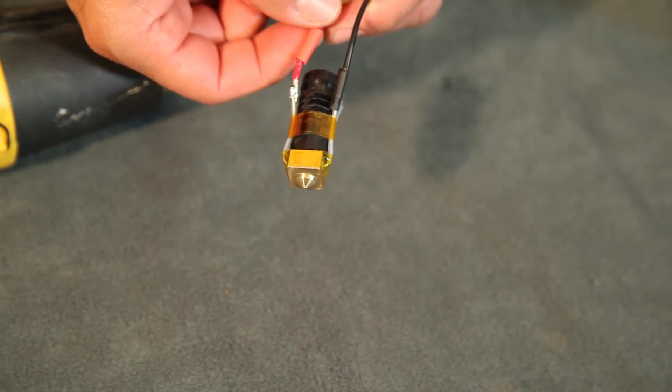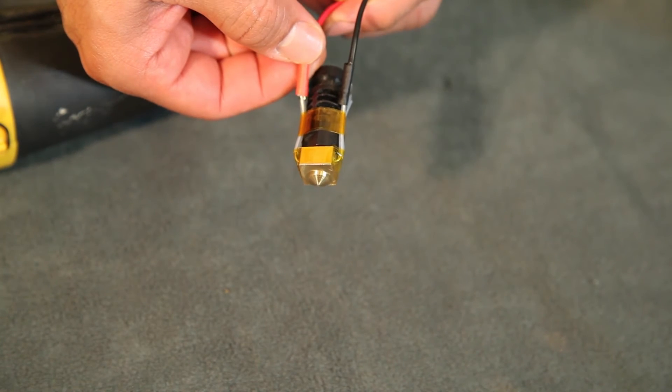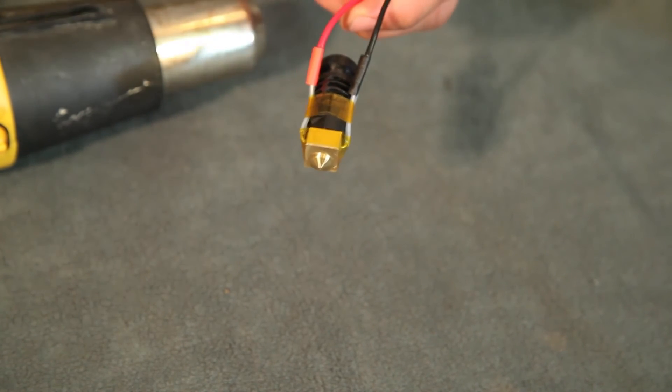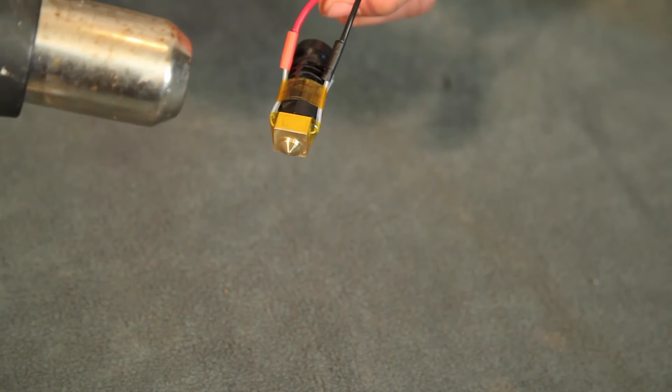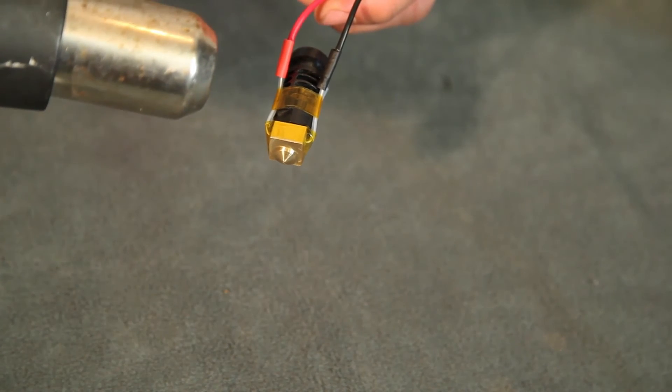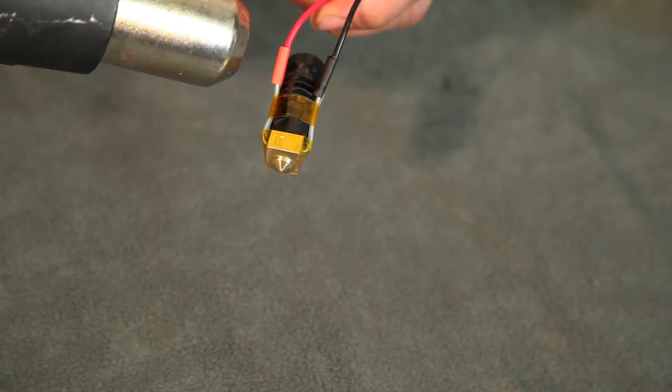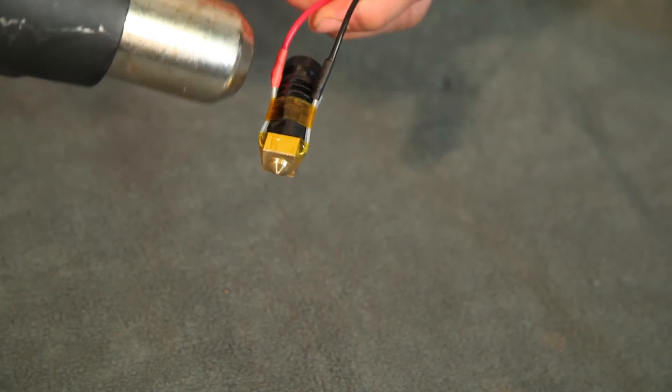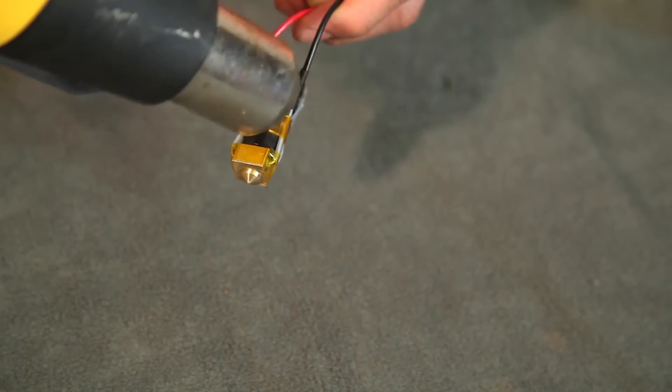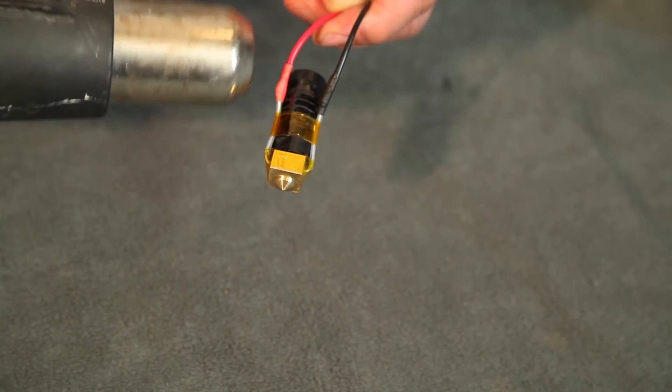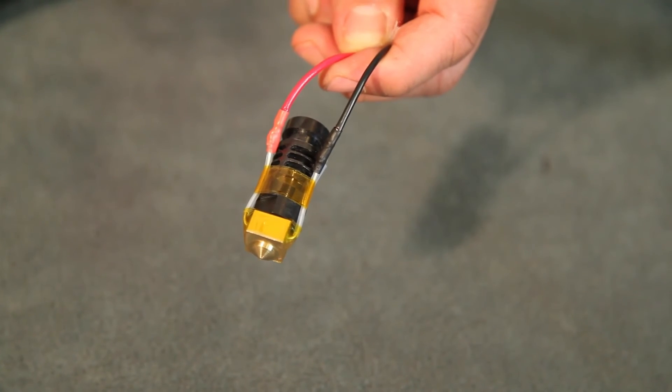Once you've got your joint soldered, go ahead and slide over your heat shrink tubing and apply some heat with your heat gun. And that's your final product there.